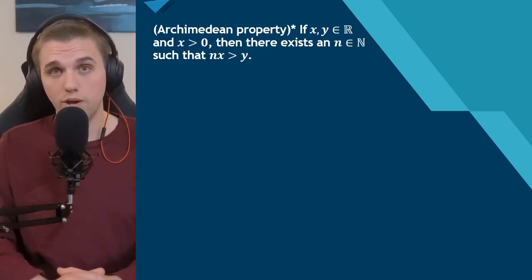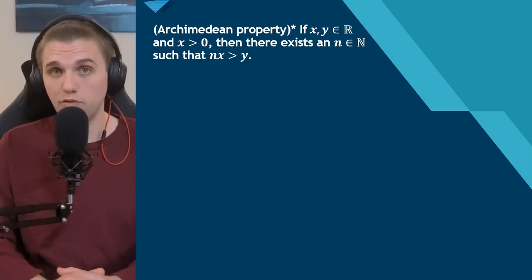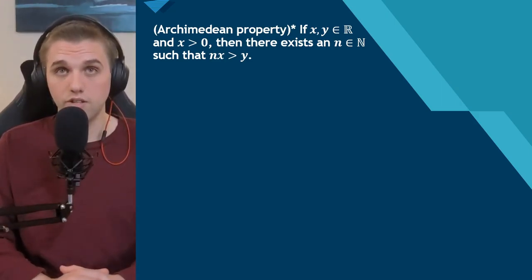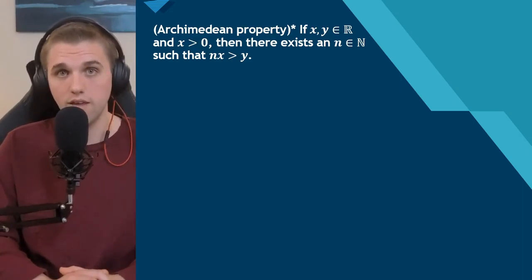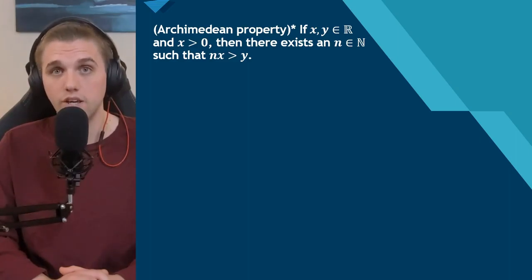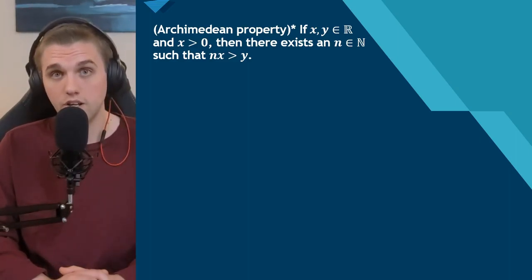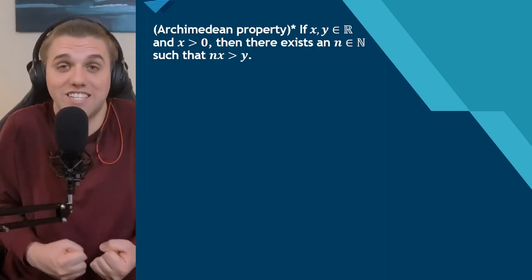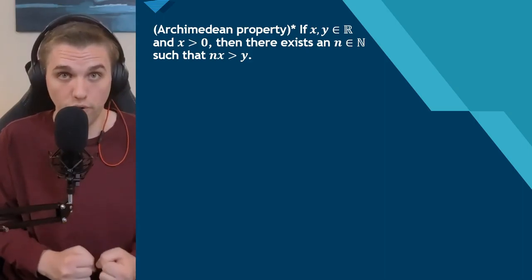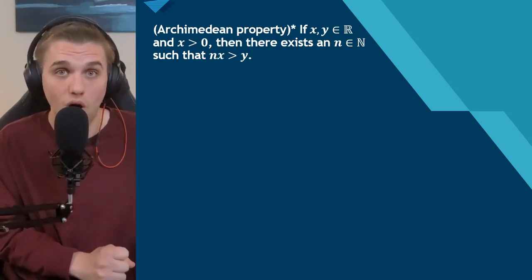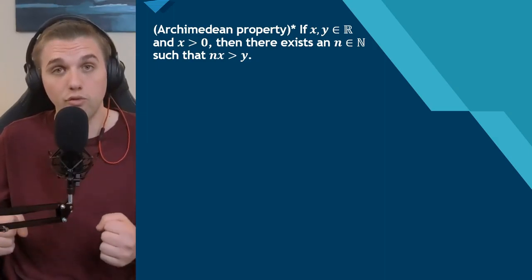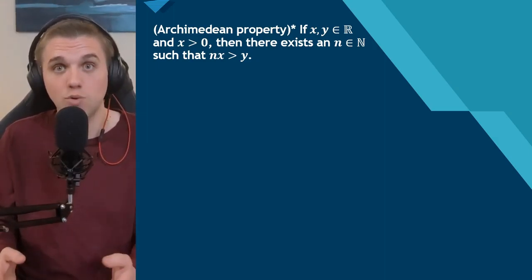Next, I want to show that the real number line satisfies the Archimedean property. It states: if x and y are real numbers and x > 0, then there exists a natural number n such that nx > y — meaning you can measure quantity y with x. X is the ruler and y is the thing we're measuring, and we can guarantee that we can measure y with a sufficient number of rulers, n of them specifically.